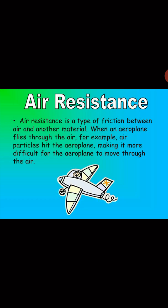Let's take this example of an aeroplane. In this image, the aeroplane is moving towards the left. As the aeroplane moves through the air, the air particles hit the aeroplane and there is a force which acts opposite to the direction of the airplane. That opposing force is called air friction, or air resistance. The friction between the object and the air is the air resistance.